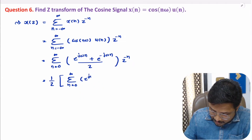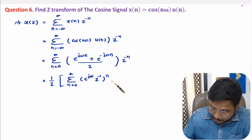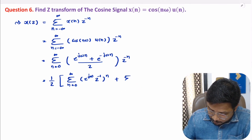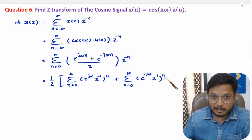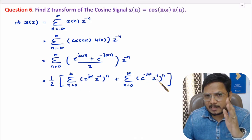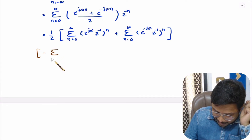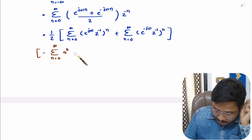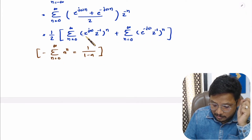Now we need to simplify this. Let me take half outside. With the first term, I write the algebraic sum from n equals 0 to positive infinity of e to the power jω times Z inverse, the whole raised to the power n. In the power, I have taken n common. With the second term, we have summation from n equals 0 to positive infinity of e to the power minus jω times Z inverse, the whole raised to the power n. I am arranging this in order to apply the basic geometric summation formula: summation from n equals 0 to infinity of a to the power n equals 1 divided by 1 minus a.